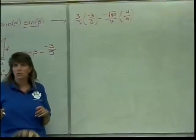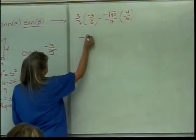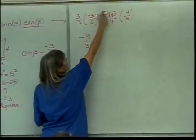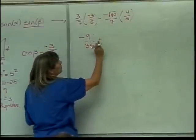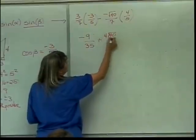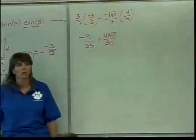So there's the answer so far. I can simplify it. I have negative 9 over 35 plus, because this plus, this negative times that negative will be a positive 4 times the square root of 40 over 35 which I can put together into a single fraction if I really, really wanted to.